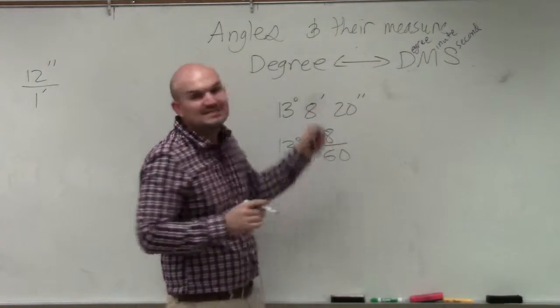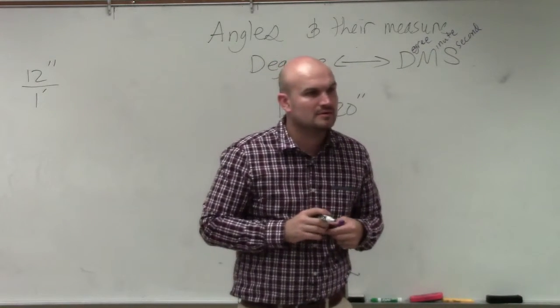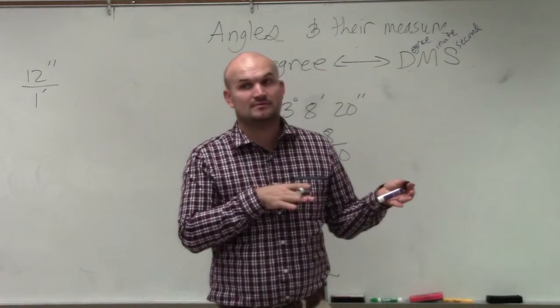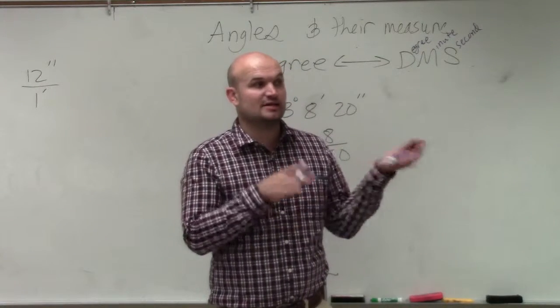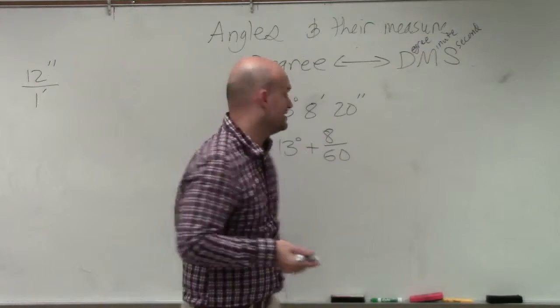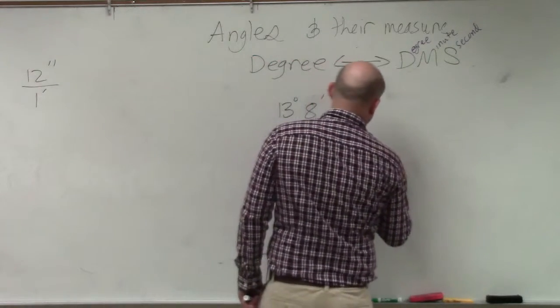And then how many seconds are there in one degree? Well, let's think about it. How many seconds are there in a minute? 60. And there's 60 minutes in a degree. So 60 times 60 is 3,600.